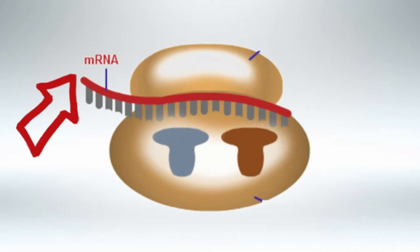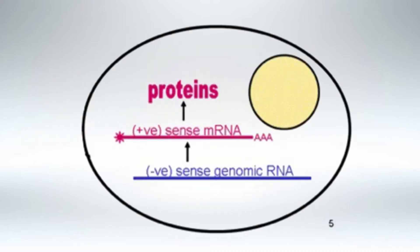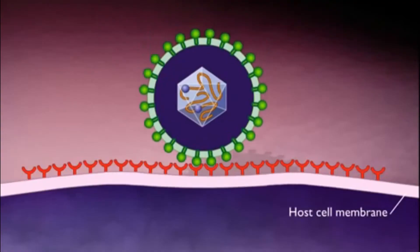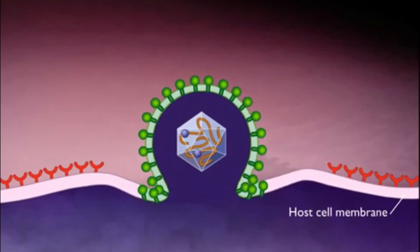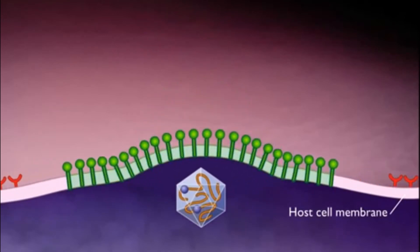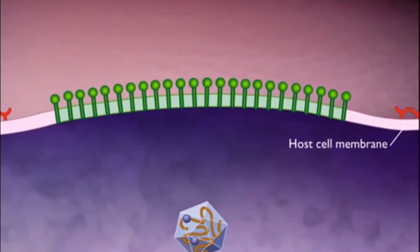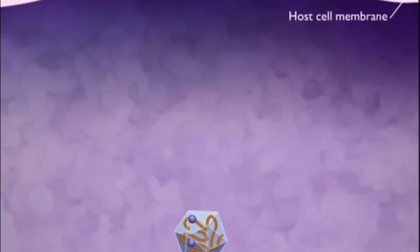In single-stranded RNA viruses, if the genome has the same base sequence as the mRNA used to produce viral proteins, then the genomic RNA can serve as the mRNA. Such viruses are called positive-strand viruses. If the genome is complementary to the viral mRNA, then the virus is called a negative-strand virus. A special class of RNA viruses called retroviruses have an RNA genome that is reverse transcribed into DNA by the enzyme reverse transcriptase. The DNA fragments produced by reverse transcription are often integrated into a host's chromosomal DNA.